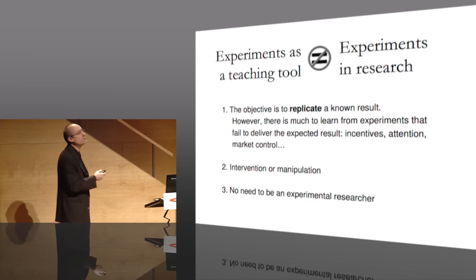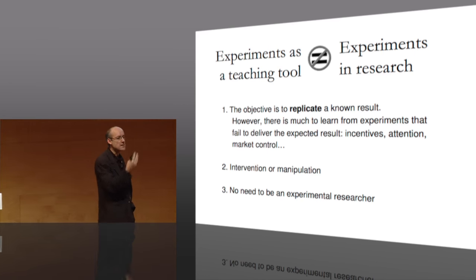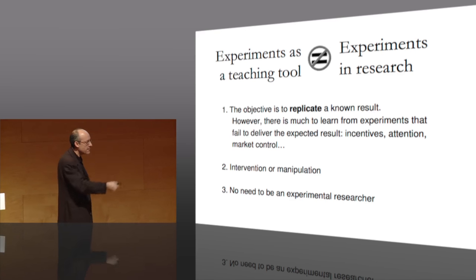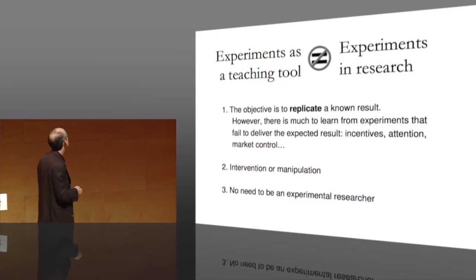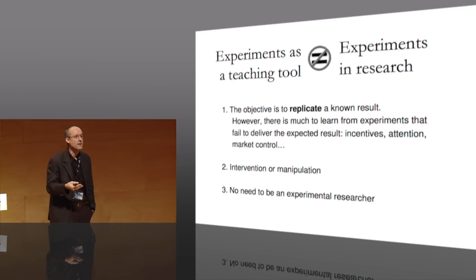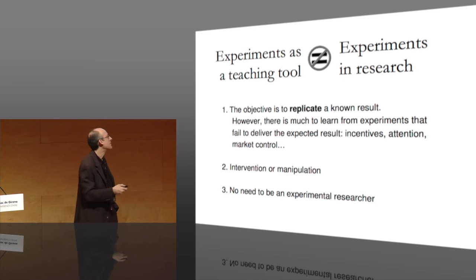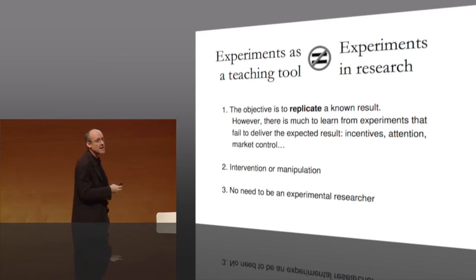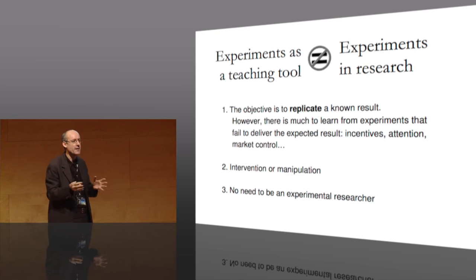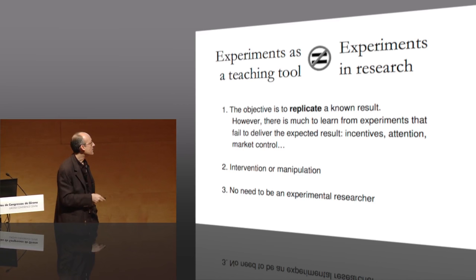Experiments as a teaching tool are different from experiments in research in many aspects. First, the objective is to replicate, not to find something new. I want to teach something — I want to show students there is a principle you can observe in everyday life or at least in this experiment. This doesn't mean all experiments will give the predicted outcome. And actually, you can learn a lot from failed experiments. Usually the reasons are clear: students don't have the right incentives, didn't pay attention, or sometimes in a perfectly competitive market experiment, buyers or sellers talk to each other and try to collude.